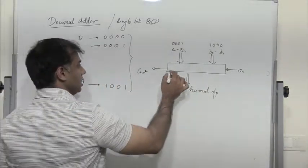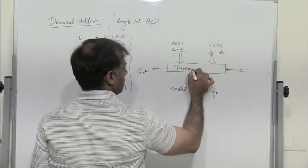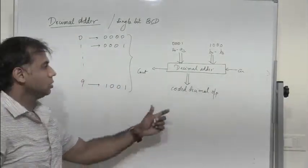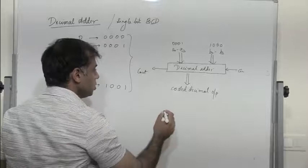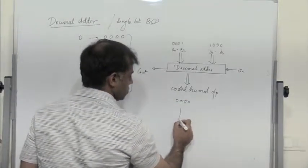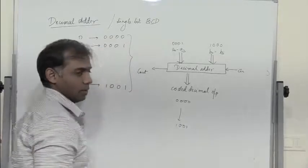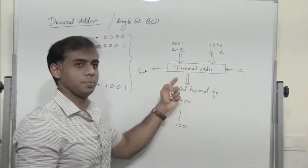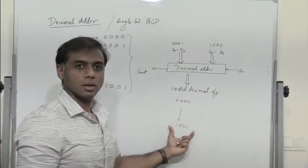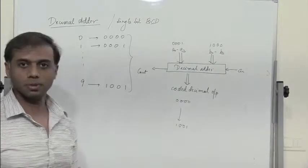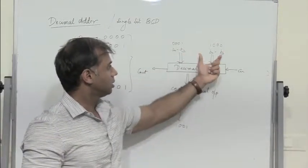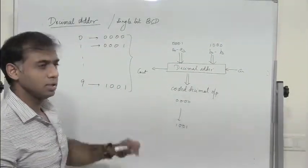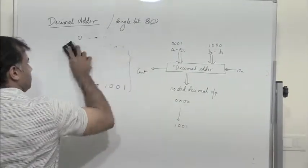This is a decimal adder. The coded decimal output should also range between 0000 and 1001, meaning the output should also be in BCD format. We need to design a circuit that gives a BCD representation at the output when adding two BCD numbers.